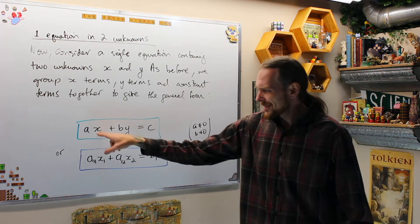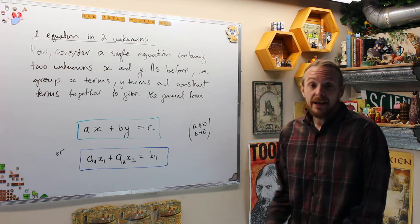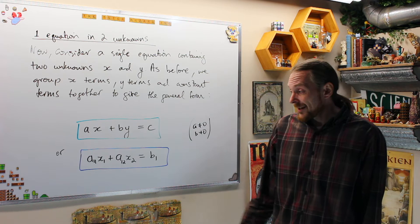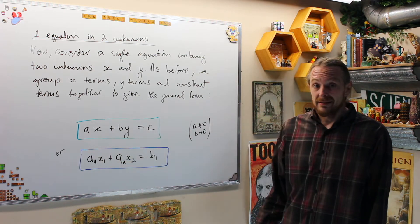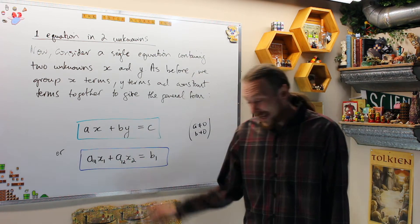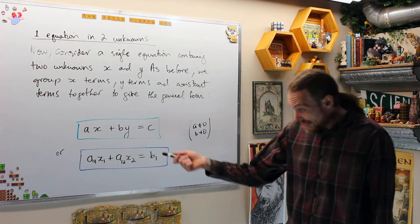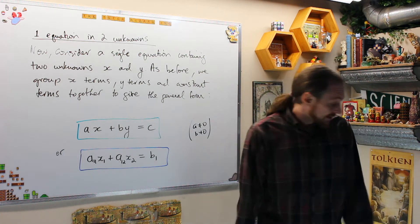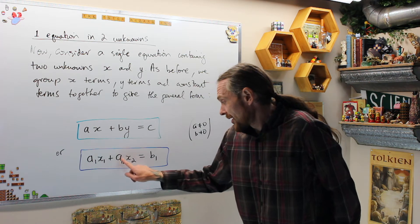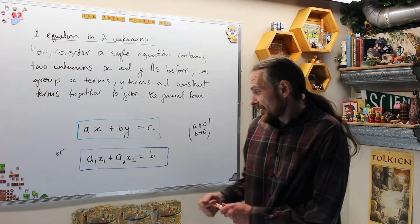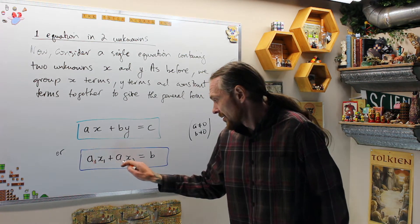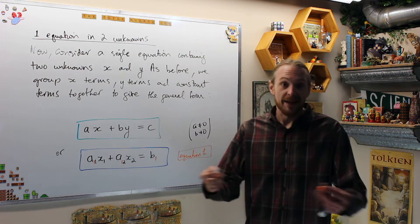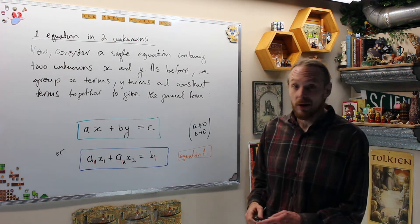We're going to make it look like this — for simplicity call the constants a, b, c and our two variables x and y, but for convenience we want to index everything. In general it's going to look like: a₁₁x₁ + a₁₂x₂ = b₁. Here's the color code: these were all the same index because it's equation 1 — there is only one — but we're going to get more eventually.